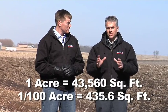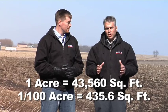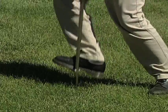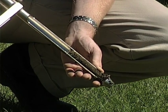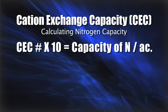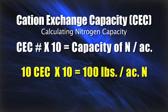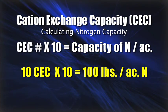On your lawn, you're probably going to put some nitrogen out this spring. One acre is 43,560 square feet, so one one-hundredth of an acre is about 435 square feet. If you have a CEC of 10, multiply that times 10 and you get 100 — meaning that whole acre can hold 100 pounds of nitrogen. For a 435 square foot lawn, that's just one pound of nitrogen. If your CEC was 20, you could put two pounds out there.